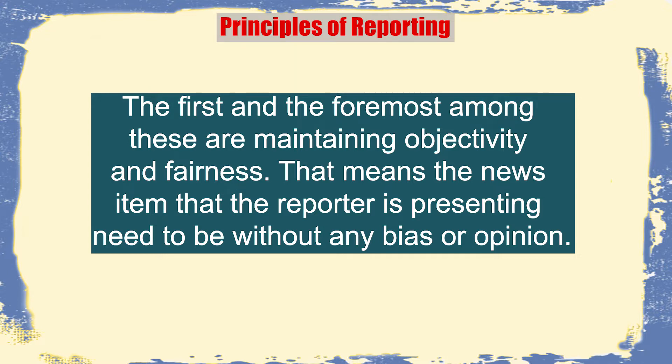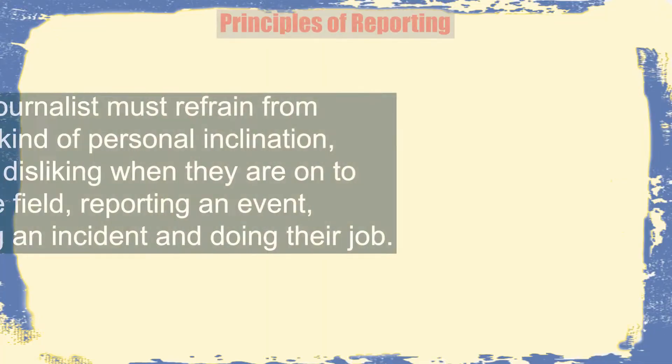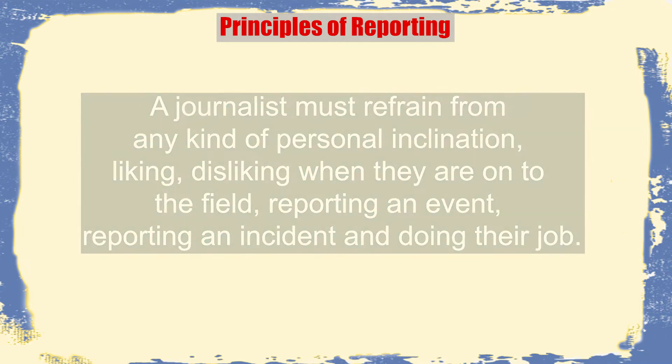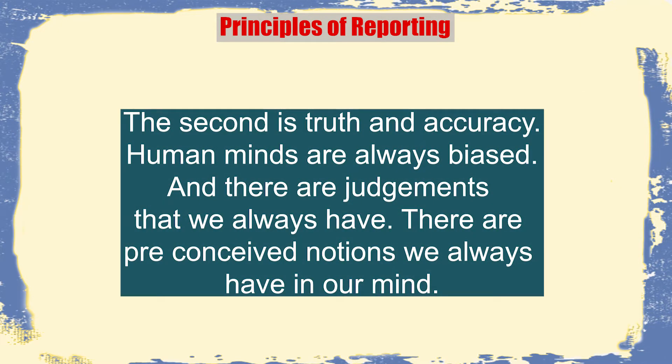I might like a person or follow a particular political ideology, but when I'm reporting I have to maintain a very objective and unbiased approach. If I'm not able to do that, I am not suitable to become a reporter. A journalist must refrain from any personal inclination, liking, or disliking when on the field reporting an event or incident. The second principle is truth and accuracy — human minds are always biased and have preconceived notions, but a reporter is not supposed to be like that.